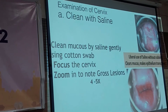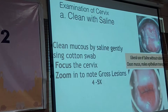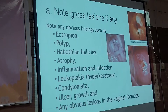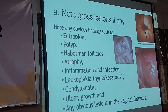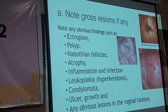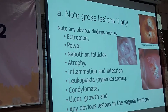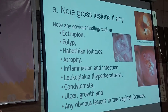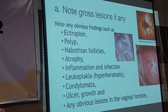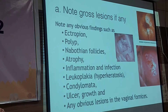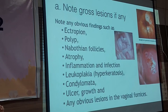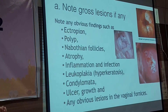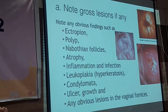Any gross lesion found at this stage must be noted. This includes not only suspicious lesions but also findings like ectropion, polyp, Nabothian follicles, leukoplakia, condylomata, ulcers, or anything else visible under magnified, focused light. In digital colposcope systems, a good photograph can be taken of any identified pathology.